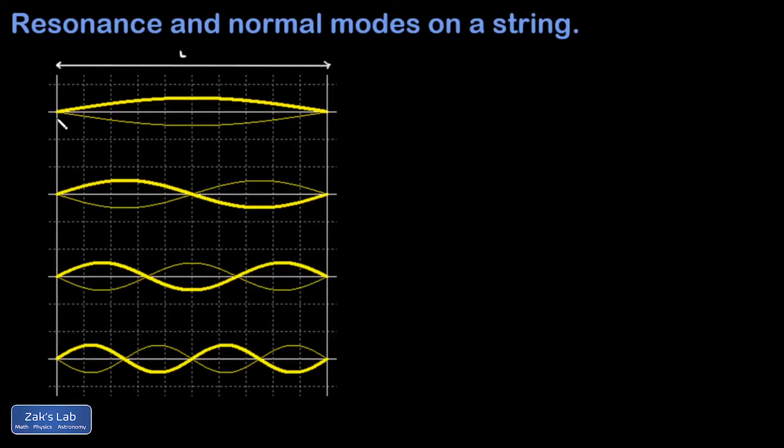The basic physical principle behind this is that wave reflections will interfere constructively with each other as long as our wavelength matches the boundary conditions for the string, which in this case is zero displacement at both ends.